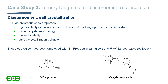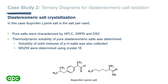Lansoprazole is one such example of an API that uses diastereomeric salt isolation during development. In our case, we are talking about ibuprofen and lysine as our salt pair. The desired diastereomeric salt will be referred to as the N salt, while the undesired diastereomer will be referred to as the P salt.